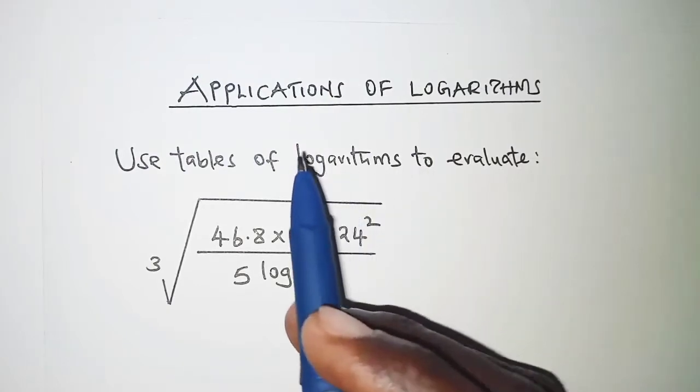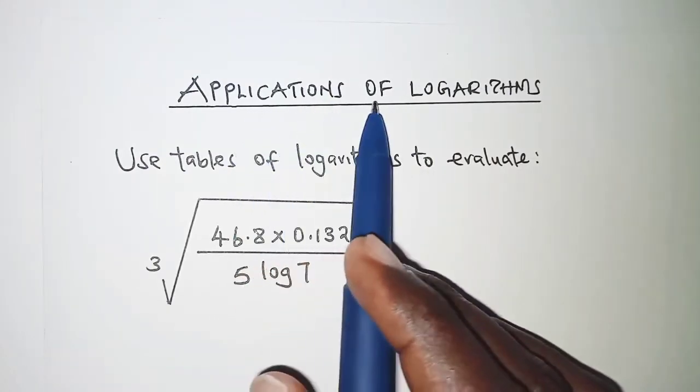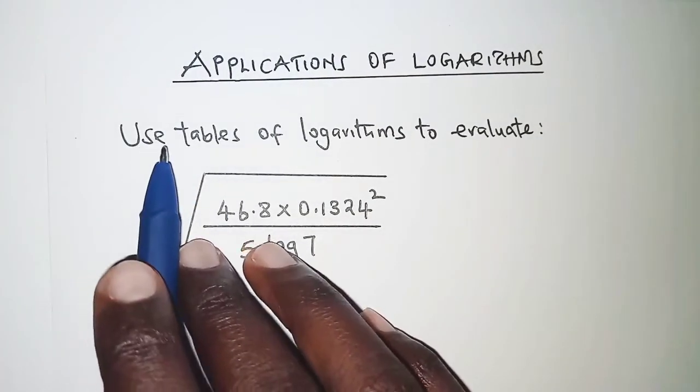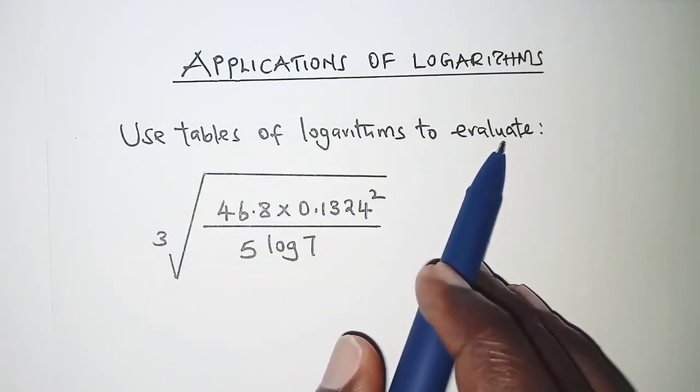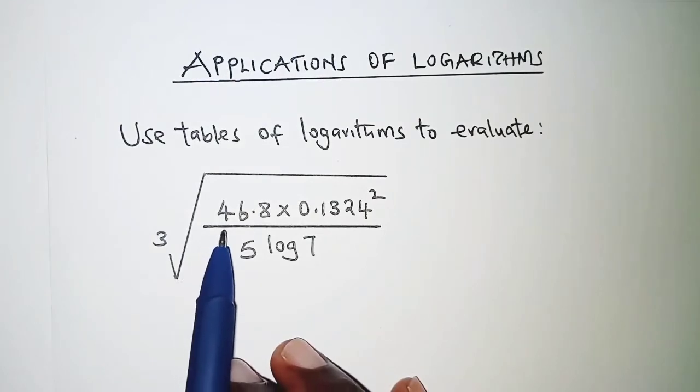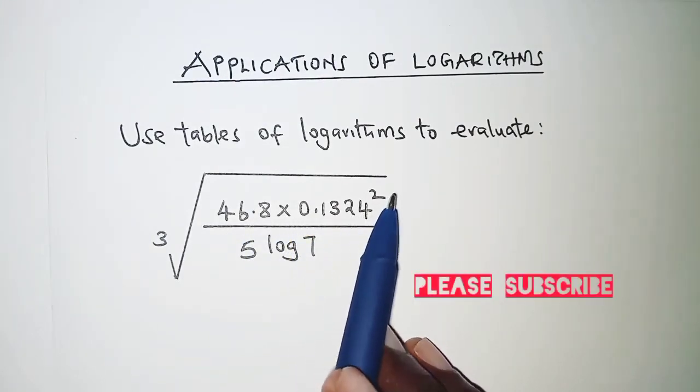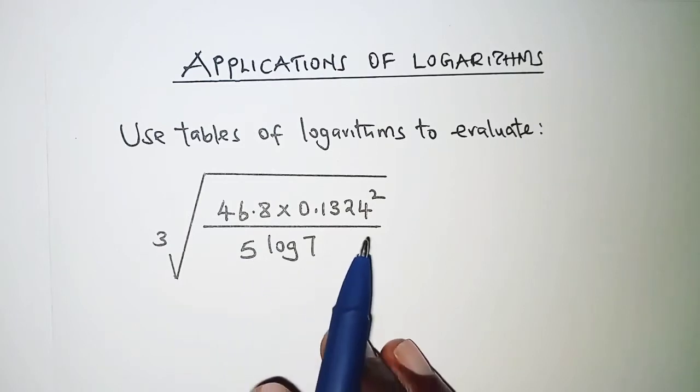Welcome. Today's presentation is on applications of logarithms and the question here reads: Use tables of logarithms to evaluate cube root of 46.8 times 0.1324 squared over 5 log 7.